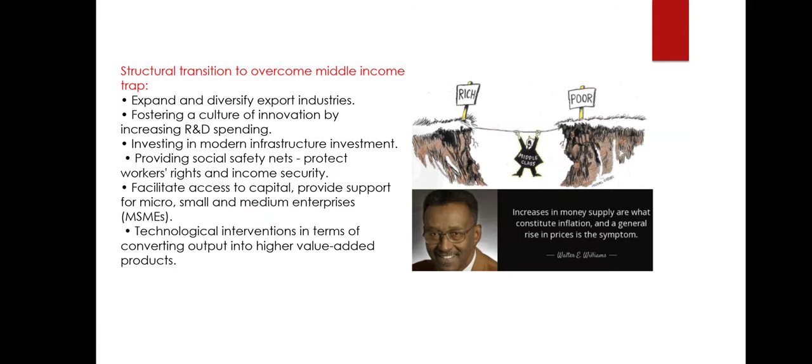Two important things need to be kept in mind to address jobless growth. First is structural transition to overcome the middle income trap. The middle income trap refers to a situation where middle income countries like India fail to transition to high income status due to rising costs and declining competitiveness. To overcome this, a country must expand and diversify export industries, create a culture of innovation, increase investment in modern infrastructure, make labor markets more flexible, provide social safety nets and income security to workers, and support the MSME sector to encourage entrepreneurship and job creation.